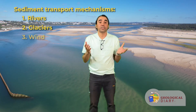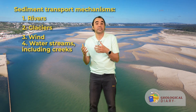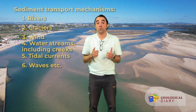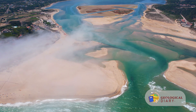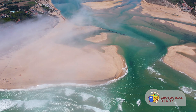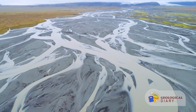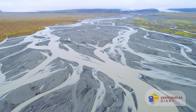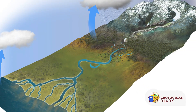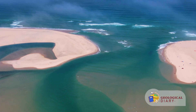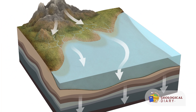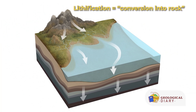Continuous chemical and physical weathering of these minerals can further disintegrate them, resulting in smaller particles called detritus, leading to re-dissolution. Eventually these detritus particles and dissolved substances — collectively called sediments — are susceptible to being removed and entrained into any sediment transport mechanism such as rivers, glaciers, wind, water streams including creeks, tidal currents, and waves. They end up being deposited somewhere away from their source. The places where sedimentary particles come to rest are called sediment depositional environments.